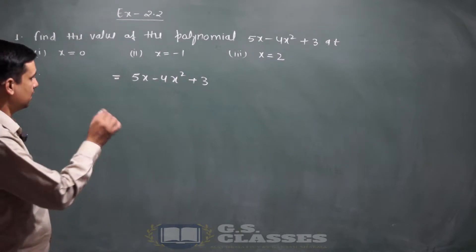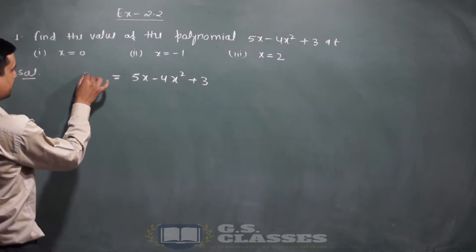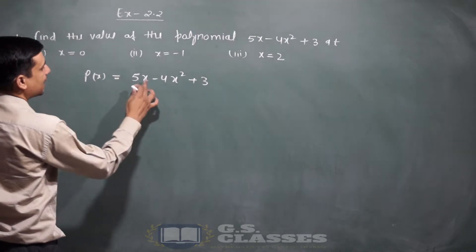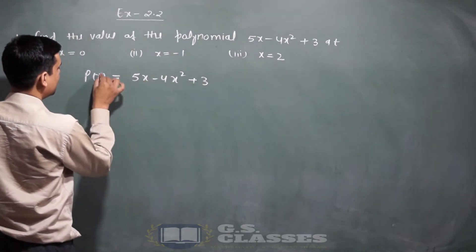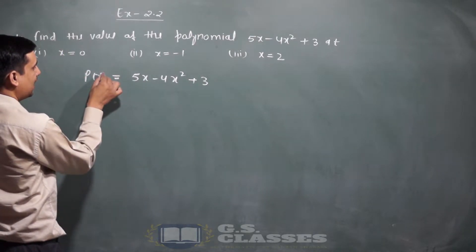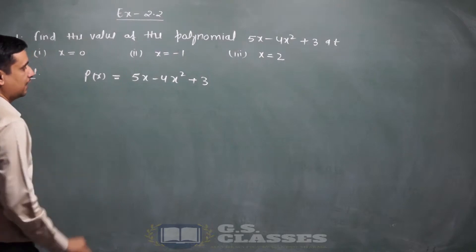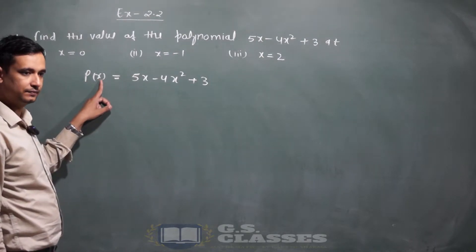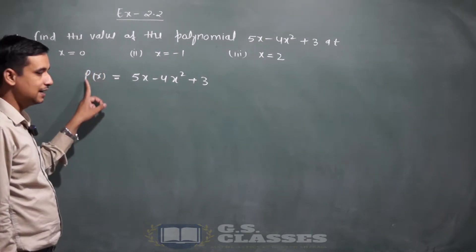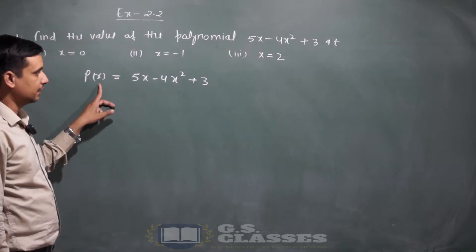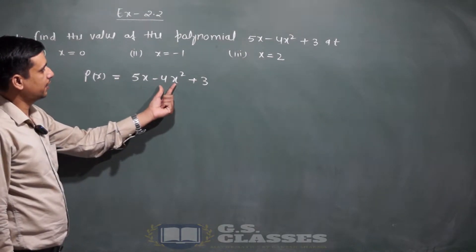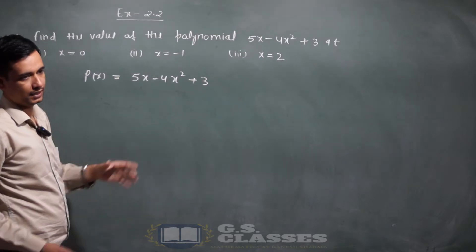Polynomial को represent करने के लिए, क्योंकि यह x का function है, तो इसको लिखेंगे p(x)। यह polynomial को represent करता है। हमें given है polynomial: 5x minus 4x square plus 3।